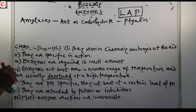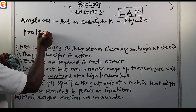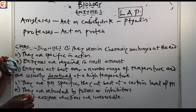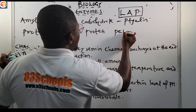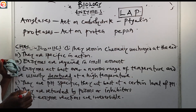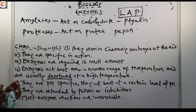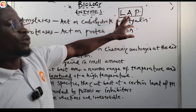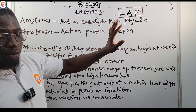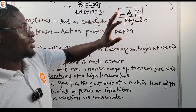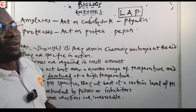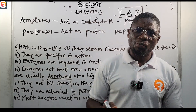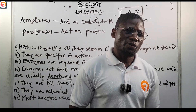Number three: proteases. Proteases act on proteins. An example of a protease is pepsin. So to summarize: lipases act on fats and oils, converting them to fatty acids and glycerol; amylases act on carbohydrates; and proteases act on proteins. That has been a very informative and enjoyable class. Let us now go back to the O3 Schools JAMB app and answer the question we had at the beginning.